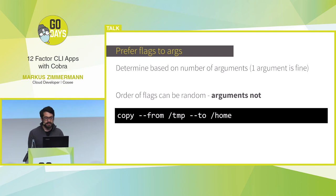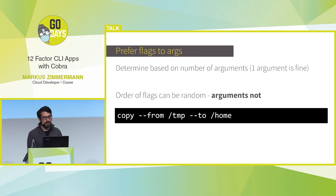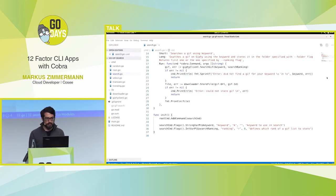Another important thing: you should prefer flags instead of arguments. This really depends on the number of arguments your command has. If your command only has one argument, it doesn't make sense to use a flag — the remove command is a good example. But if you have multiple arguments, you should always use flags. The reason is that flags can be randomly ordered when you define them. A simple example is copy: everyone knows you copy from source to destination, but if you forget the order, in the worst case you have the arguments reversed.